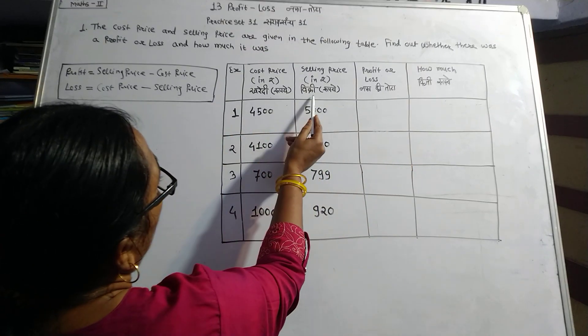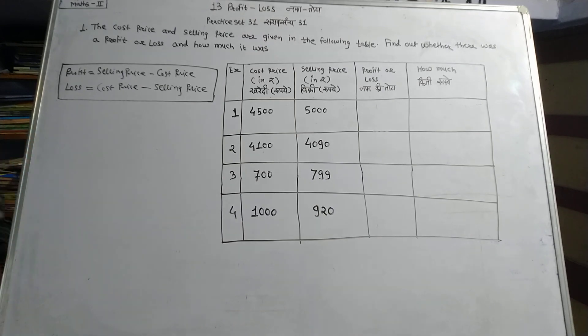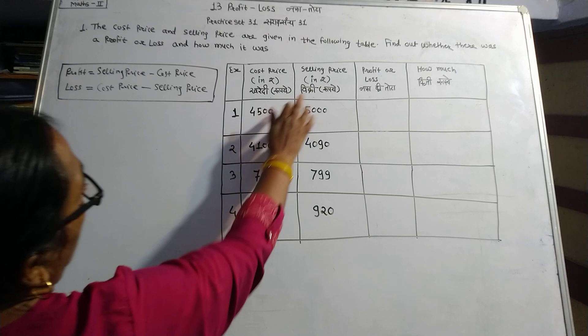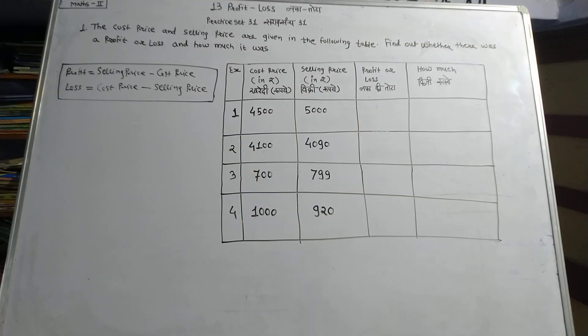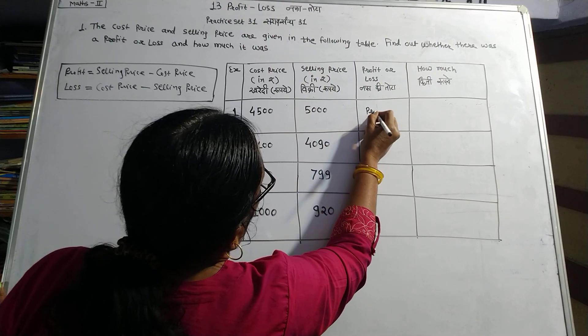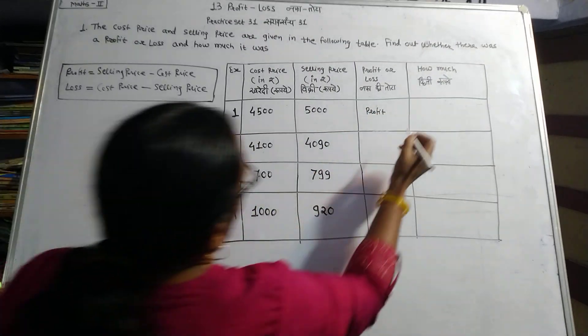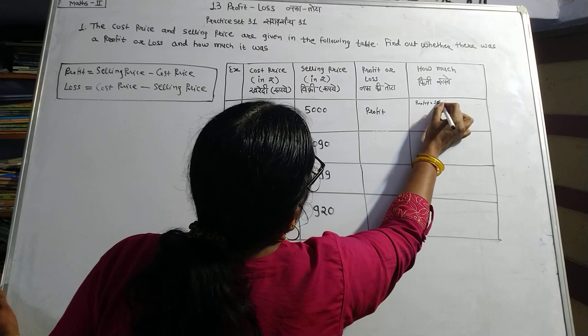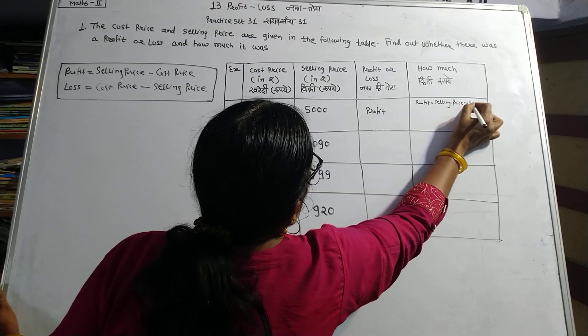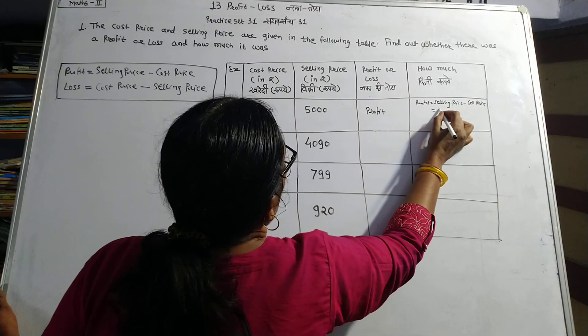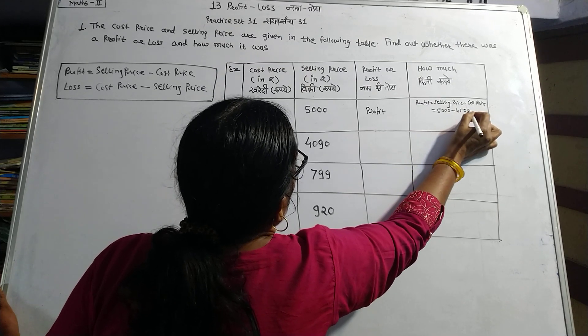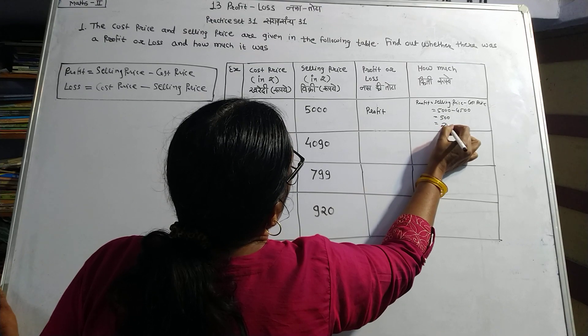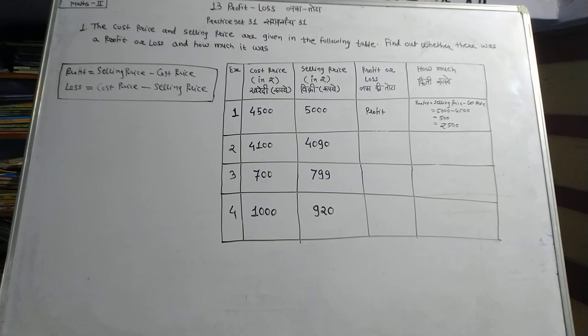The cost price is 4,500 and selling price is 5,000. Since the selling price is greater than cost price, there is profit. Profit equals selling price minus cost price, which is 5,000 minus 4,500 equals 500 rupees. Therefore, the profit is rupees 500.